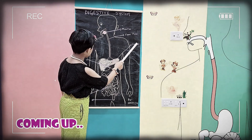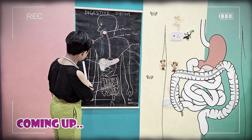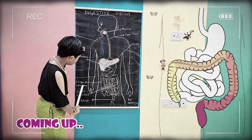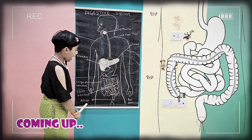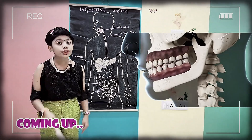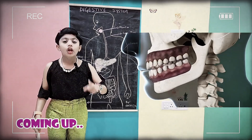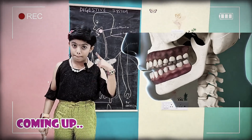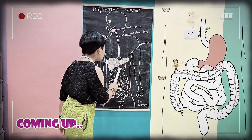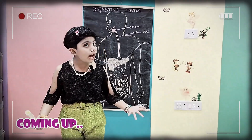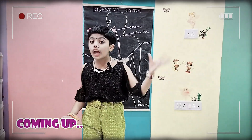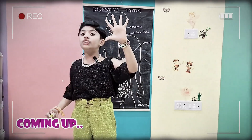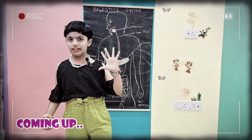The human digestive system consists of the mouth, the food pipe, the liver, the stomach, the small intestine, the large intestine, and the anus. While you're chewing your food, your teeth grind it into a paste. Your stomach is like a muscular bag — it contracts and becomes smaller and relaxes many times.